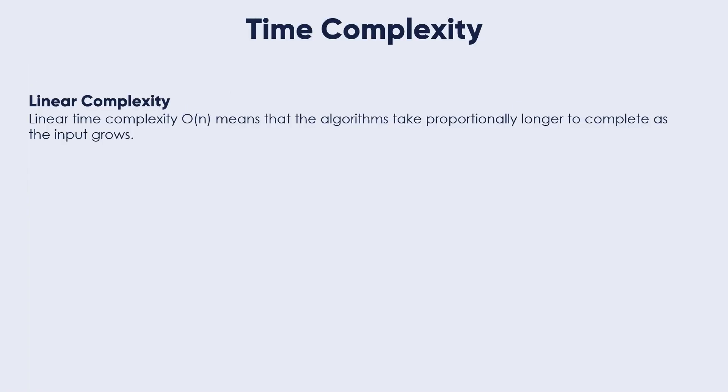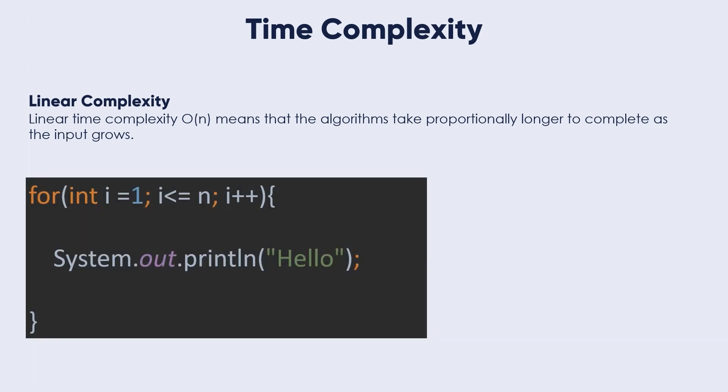In coding, linear time complexity means that the algorithms take proportionally longer to complete as the input grows. For example, if we have a loop for int i equals 1, i less than or equal to n, i plus plus, and we need to print hello every time. When we print a message or assign variables or do anything not related to the input, we consider it as a constant. This loop will go through from 1 to n. It will be repeated n times.